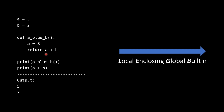To perform this addition, Python needs to find out what values are associated with both a and b. A function defines its own local scope, so Python goes looking first locally, searching upward through the function body. It finds a defined locally as three, and terminates the search — it will never find the global a defined as five, because the local assignment is found first.